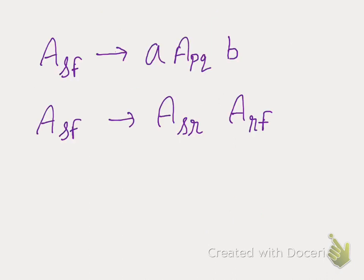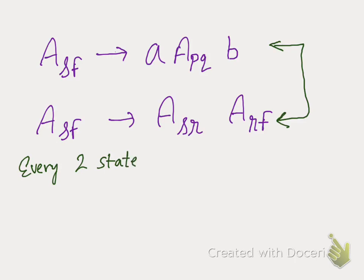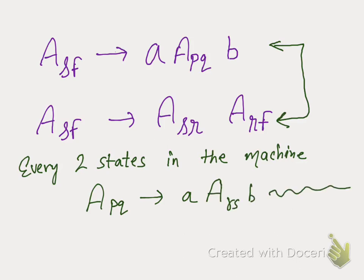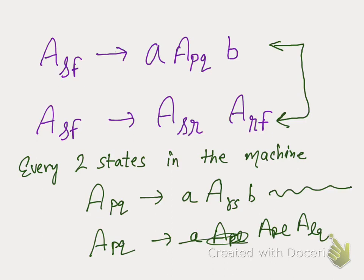We apply this for every pair of states in the machine. For every two states, we write: A_pq → a · A_rs · b provided all conditions are met, or A_pq → A_pl · A_lq. This is done for every pair of states when converting the PDA to a grammar.